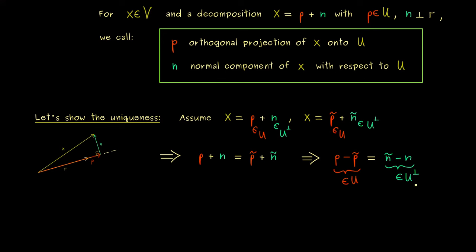Hence our result here is that the new vector we form here lies in the intersection of U with U orthogonal complement. And indeed this intersection only contains the zero vector. If we want to prove that, we can simply use the orthogonality definition. It states that the inner product ⟨p - p̃, ñ - n⟩ has to vanish. This is orthogonal because we know that ñ - n lies in the orthogonal complement.